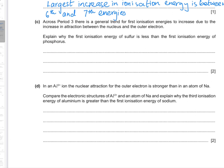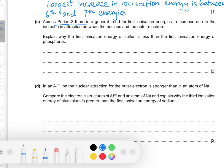Part c: Across Period 3 there is a general trend for first ionization energies to increase due to increasing attraction between nucleus and the outer electron. Explain why the first ionization energy of sulfur is less than that of phosphorus. According to this trend, sulfur should have a larger ionization energy than phosphorus, but it doesn't — because all of the p orbitals of sulfur are filled.